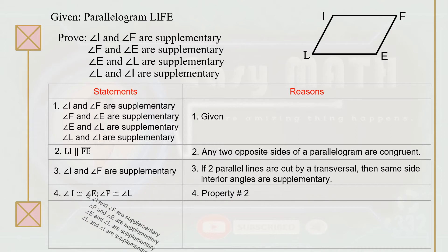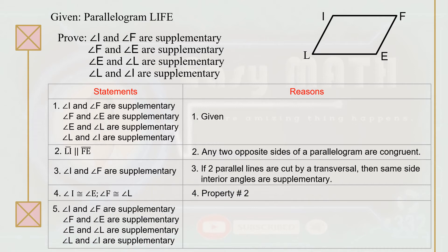For the last part of the statement: angle I and angle F are supplementary, angle F and angle E are supplementary, angle E and angle L are supplementary, and angle L and angle I are also supplementary. In other words, in a parallelogram any two consecutive angles are supplementary, because an angle that is supplementary to one of two congruent angles is also supplementary to the other.